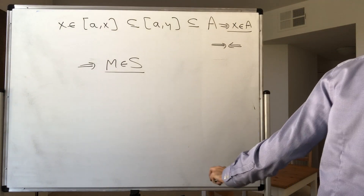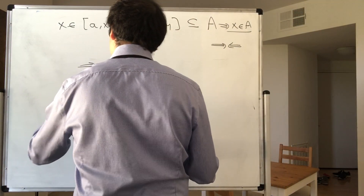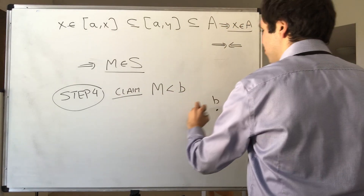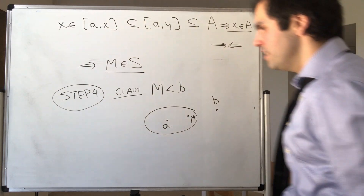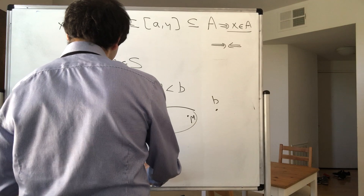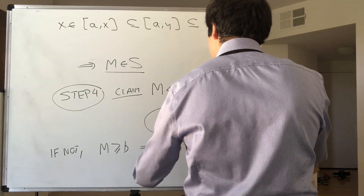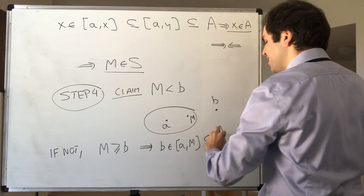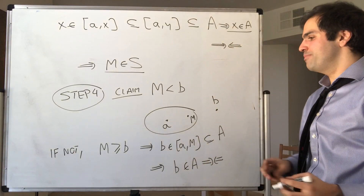Now, next we want to show that in fact M < b. So step four, claim: M is strictly less than b, which makes sense in our picture — we said M is in A and we want to show M is less than b. If not, then M ≥ b, and therefore b is in the interval [a, M]. But since M is in S, the interval [a, M] is included in A, and therefore b is in A, which is a contradiction because A and B are disjoint and b was already in B.